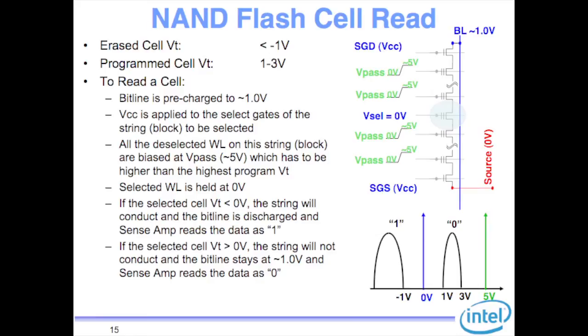Let's talk about basic NAND flash operation. You need to do only three things: write, erase, and read. For a read, the cell you're trying to read — say the blue cell — you apply a high voltage on all the other word lines to make them pass transistors with as low a voltage drop as possible, so the target cell is the sole determinant of the string's resistance.